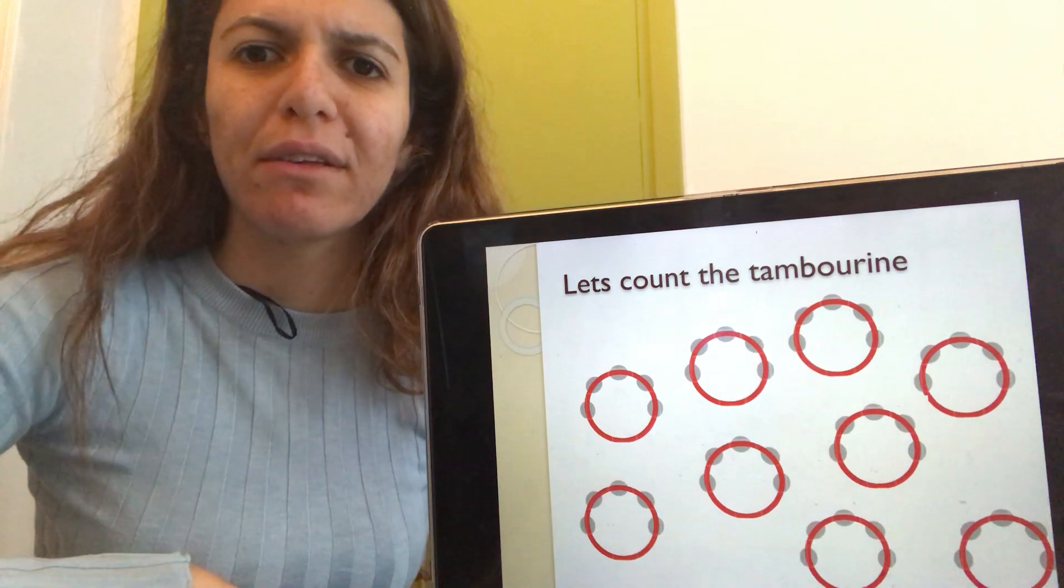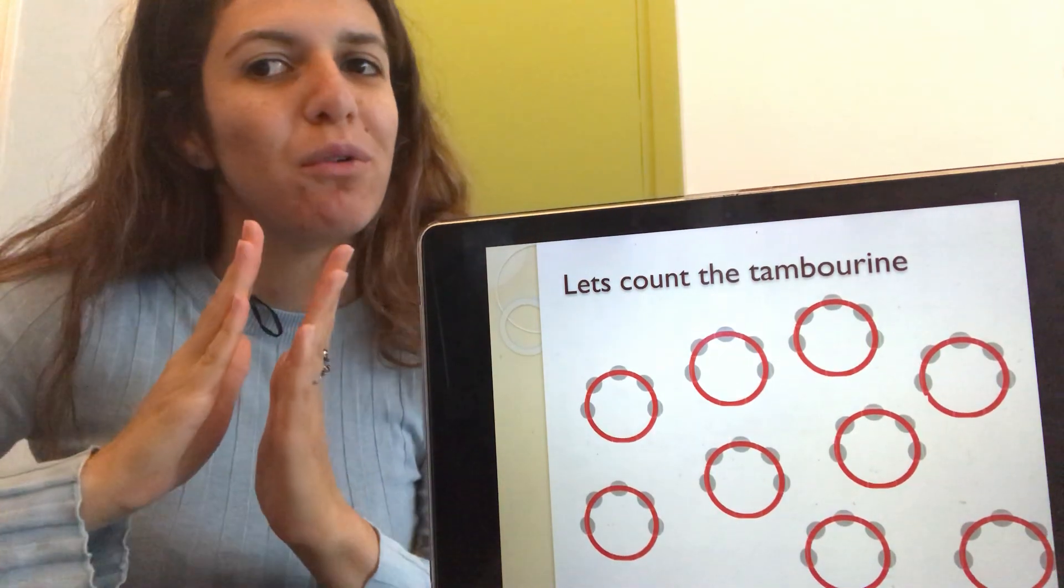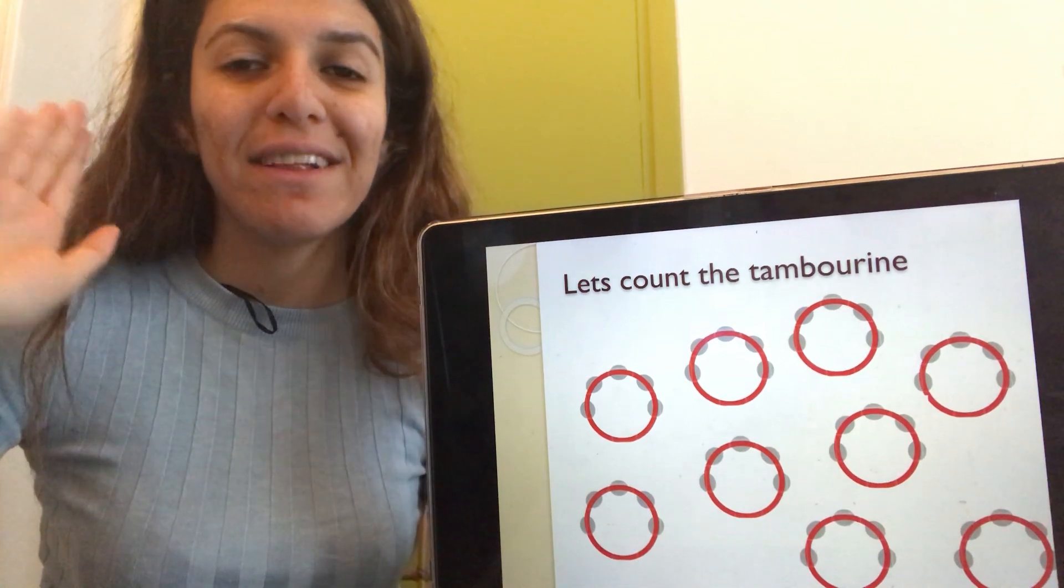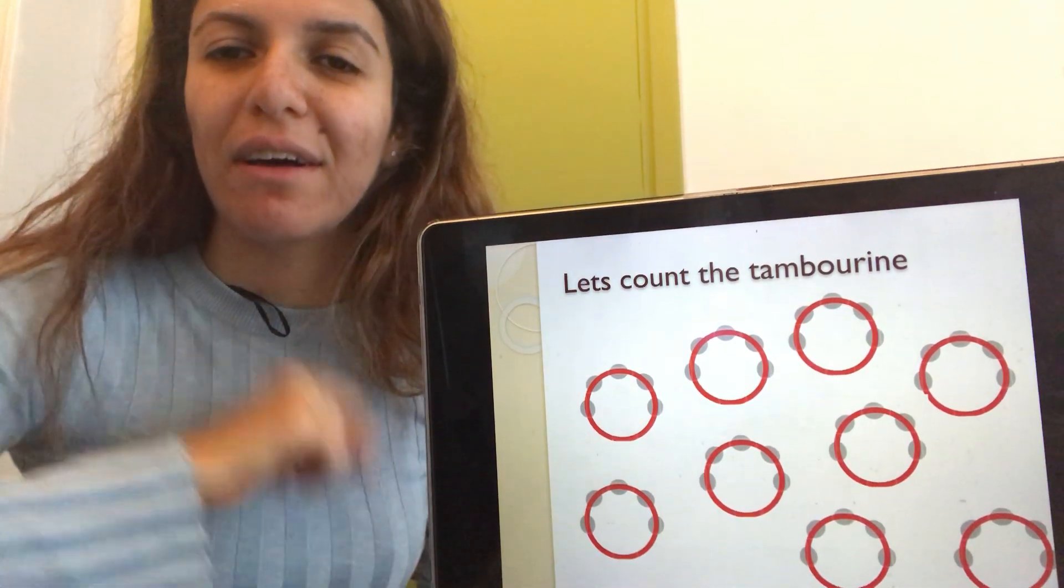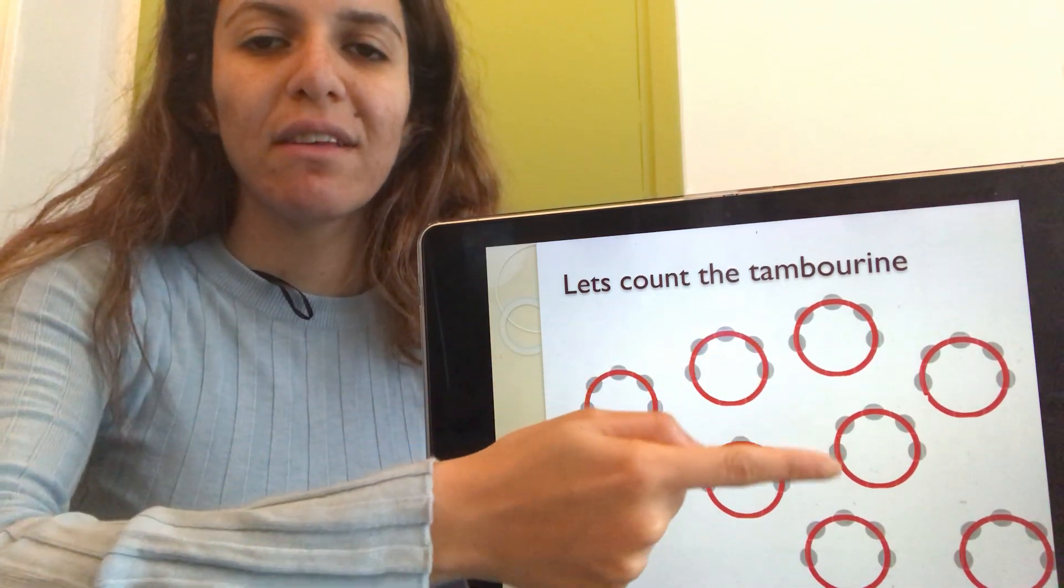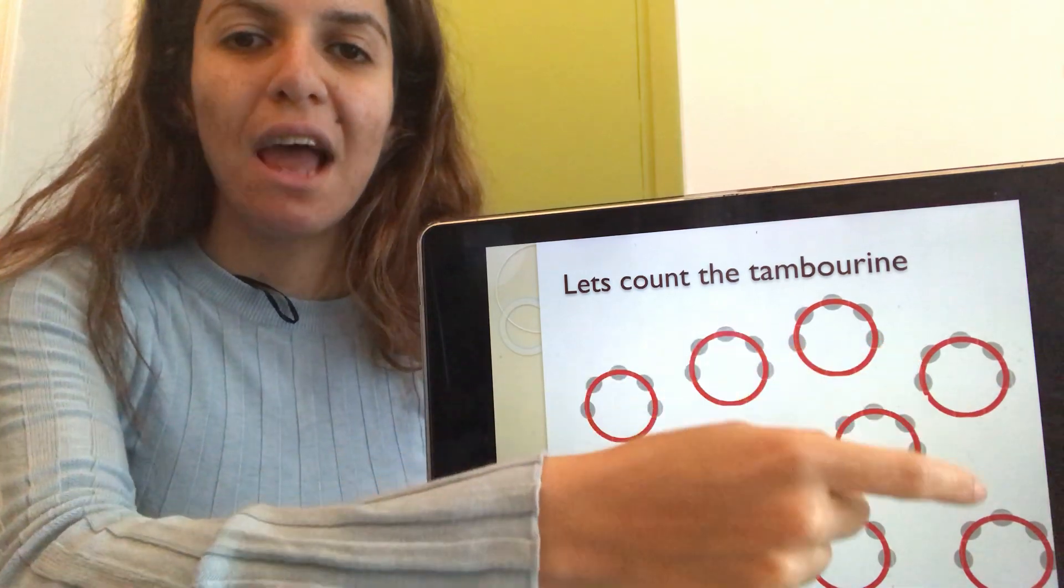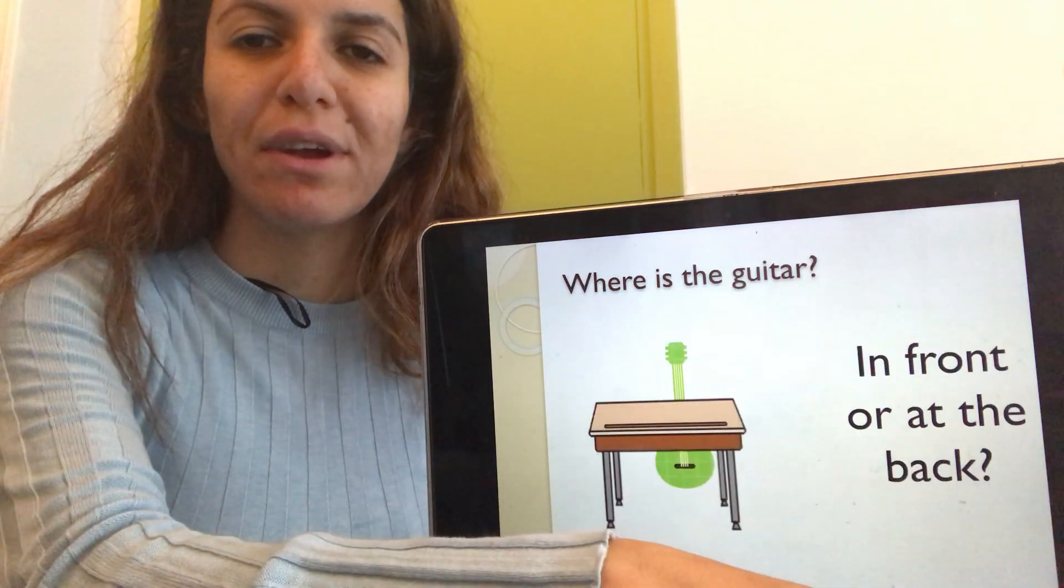And the tambourines. Oh my goodness. Are there lots of tambourines or a few tambourines? Lots? Let's count together. One, two, three, four, five, six, seven, eight, nine. Nine red tambourines.